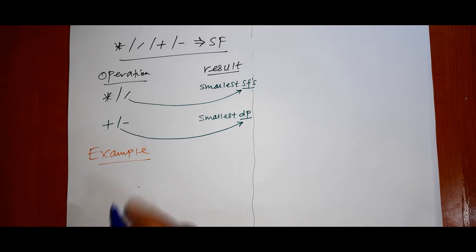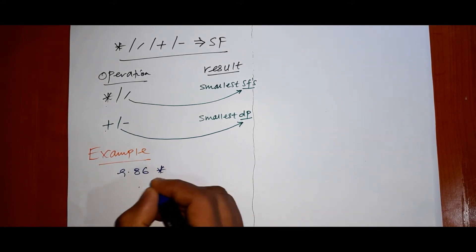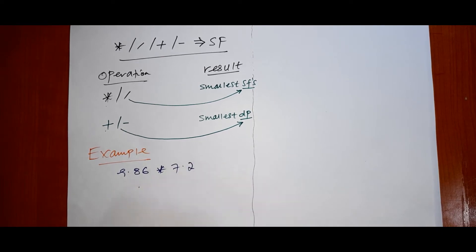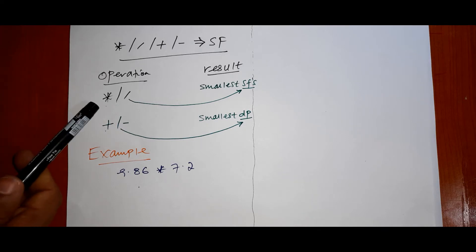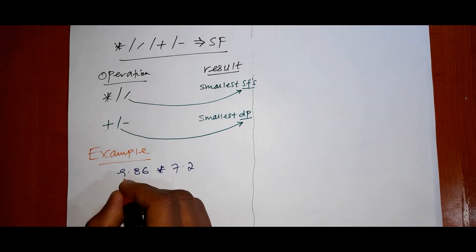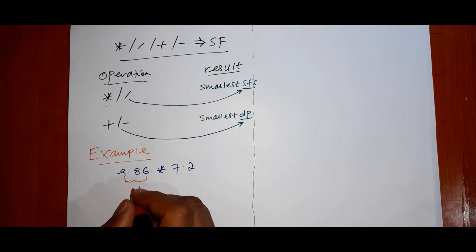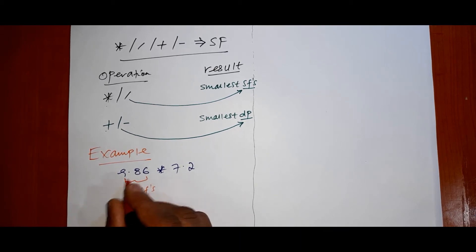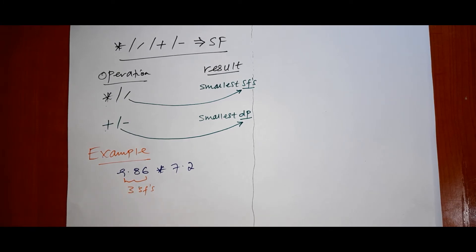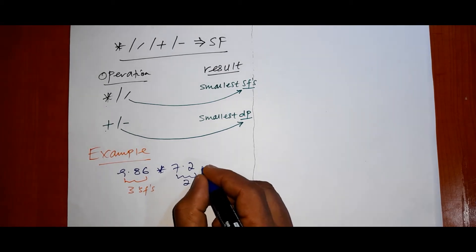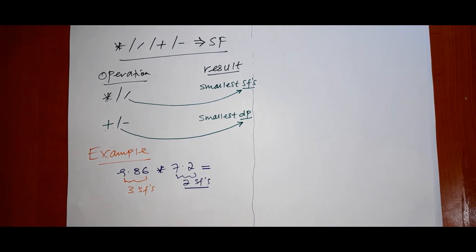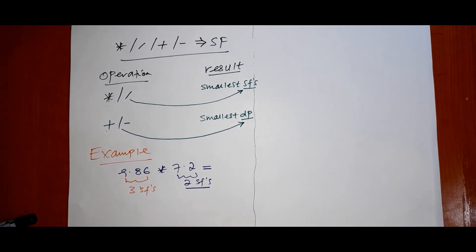Example: 9.86 times 7.2. These are the two numbers. For multiplication, consider the significant figures of each. This number — 9.86 — has three significant figures. The other number — 7.2 — has two significant figures. So the result should be on the level of the one with fewer significant figures, which is two.